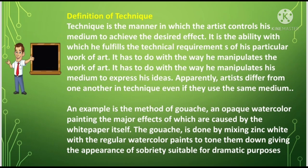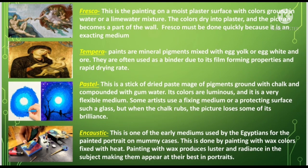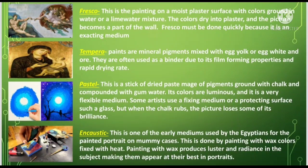These are the techniques on how to create better and pleasing artworks. We have fresco. This is the painting on a moist plaster surface with colors ground in water or a lime water mixture. The colors dry into the plaster, and the picture becomes a part of the wall. Fresco must be done quickly because it is an exacting medium. You need to search on YouTube on how to do fresco to understand it well.